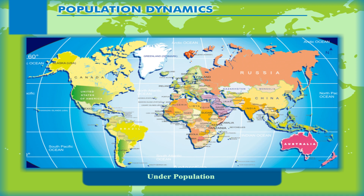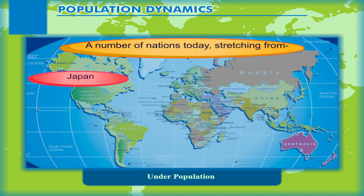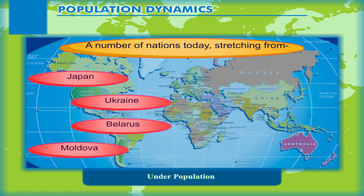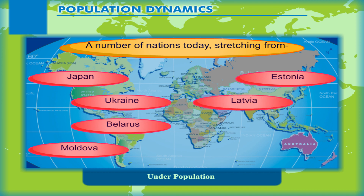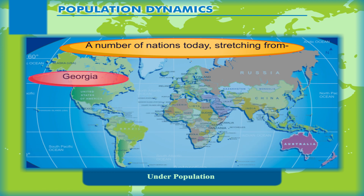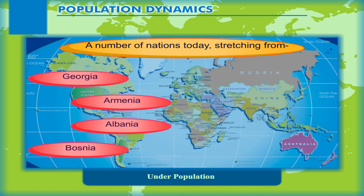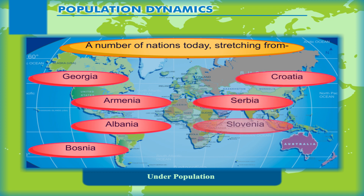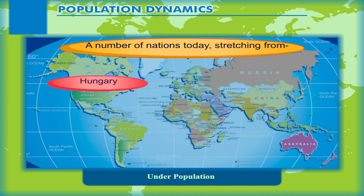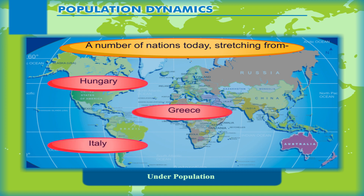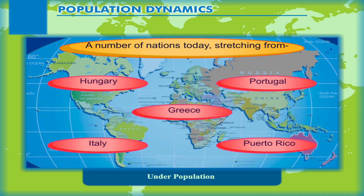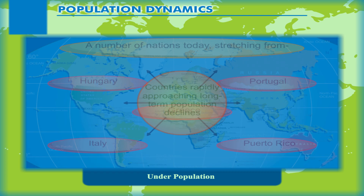A number of nations today stretching from North Asia, Japan through Eastern Europe — including Ukraine, Belarus, Moldova, Estonia, Latvia, Lithuania, Bulgaria, Georgia, Armenia — and into Central and Western Europe — including Albania, Bosnia, Croatia, Serbia, Slovenia, Germany, Hungary and now Greece, Italy and Portugal — along with Puerto Rico in the Caribbean, now face long-term population decline.